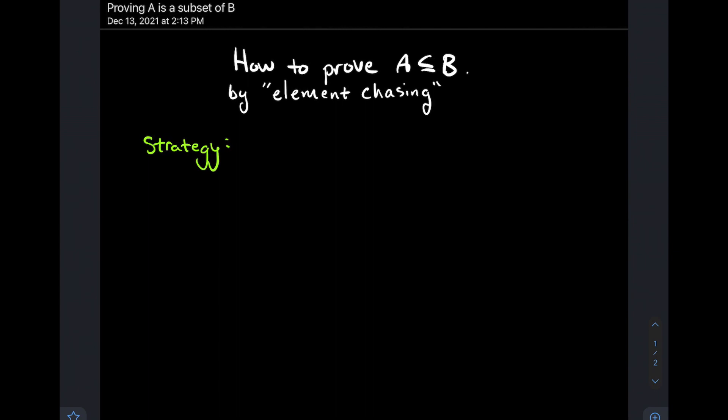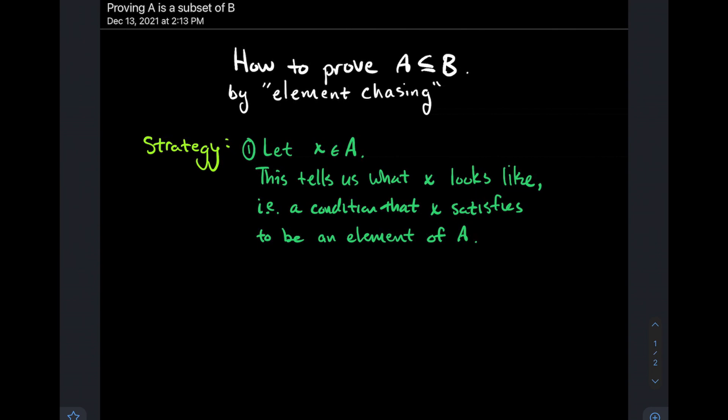Here's the strategy. The first step: let X be an element of A. What does this do? It tells us what A looks like. You might be wondering why that's important. That gives you something to write down.